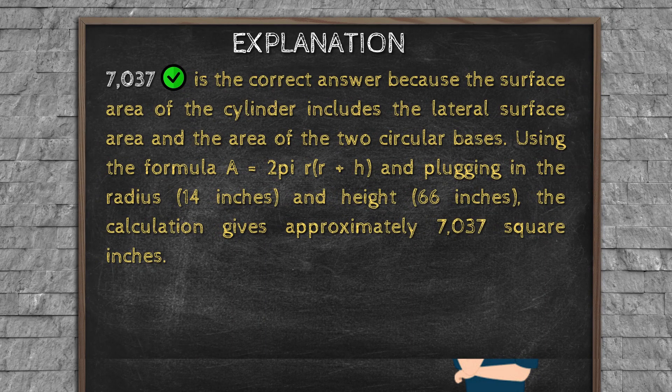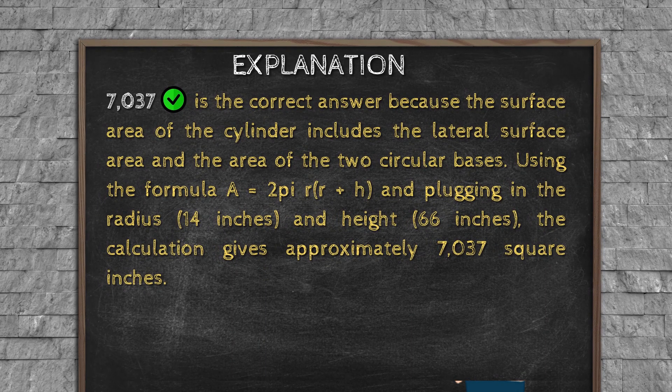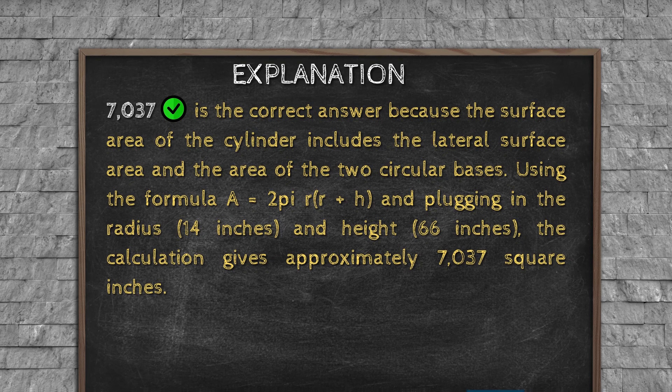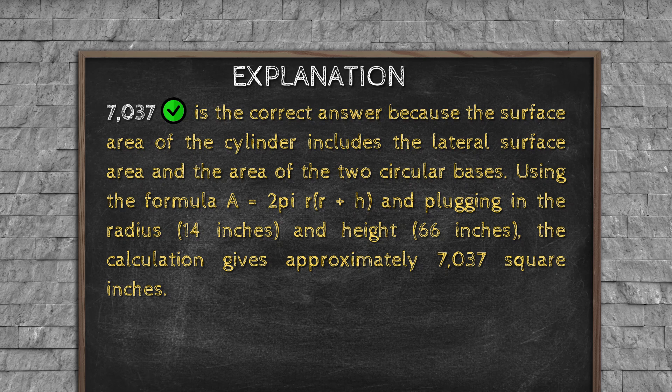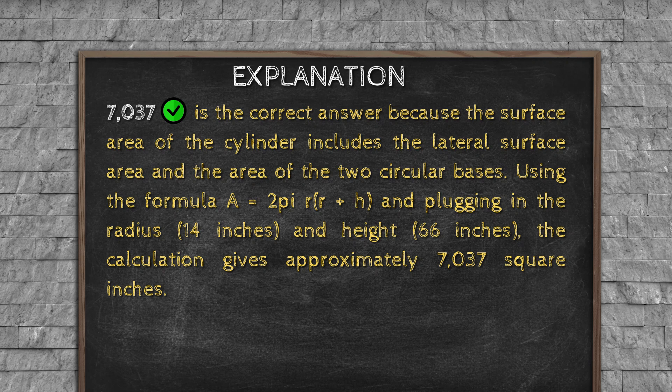Explanation: 7,037 is the correct answer, because the surface area of the cylinder includes the lateral surface area and the area of the two circular bases. Using the formula A = πr(r + H), and plugging in the radius 14 inches and height 66 inches, the calculation gives approximately 7,037 square inches.